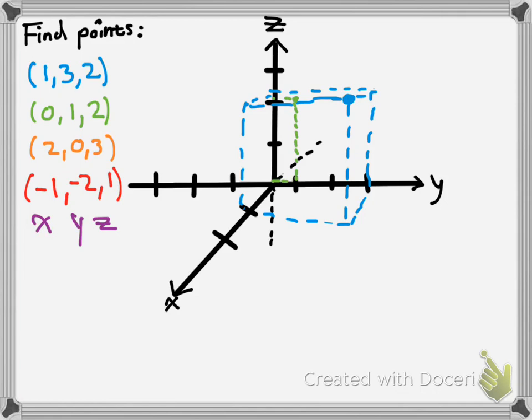So x is 2, and then 0 on the y-axis, so we aren't going to move. And then we go up 3 — 1, 2, 3. That's really sticking out there. So that's here, and I'll draw the box to give that depth perception. There you go — you have that perception.